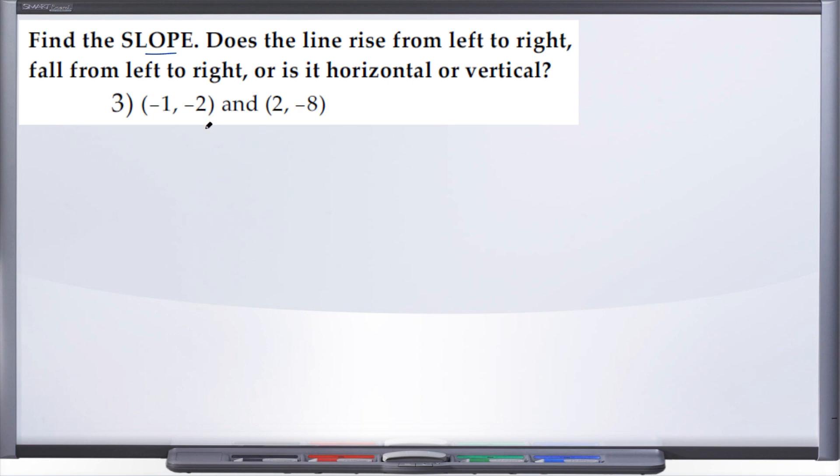And in order to find the slope, you know that we're going to need two points, which we've been given. So let's go ahead and label our points. So let's label x1, y1, x2, y2.